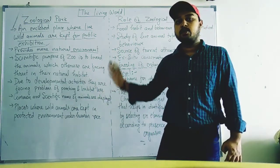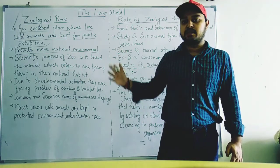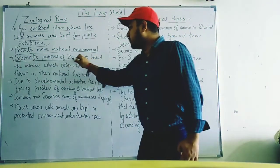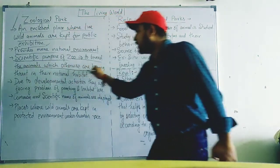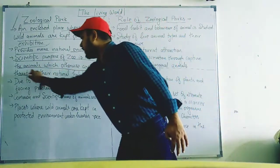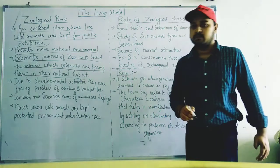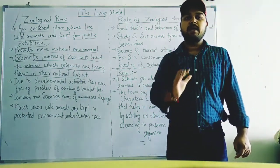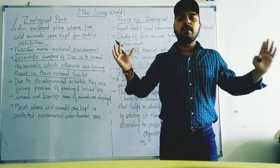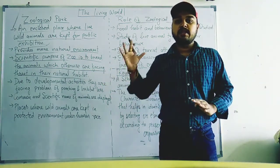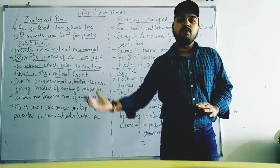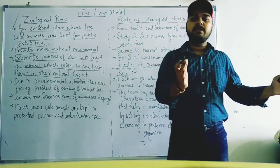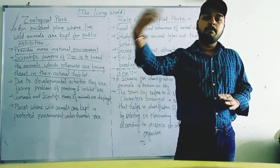The next point is that the scientific purpose of a zoo is to breed the animals which are otherwise facing threat in their natural habitat. The scientific aim is that animals whose numbers are declining and are threatened with extinction in the near future are bred in the zoo and their numbers are increased.